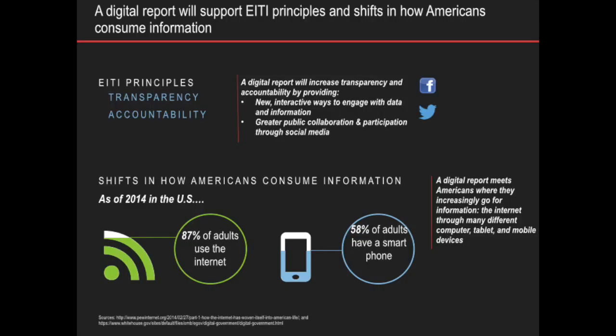One of the questions they grappled with is how most Americans consume information. For example, 87% of adults in the U.S. use the Internet, and about 58% have a mobile device, mostly a smartphone. So they're going to do a lot of work adapting the site to be used on mobile devices. This data tells us that online is the way to go for increasing public engagement and building capacity among the average American consumer.